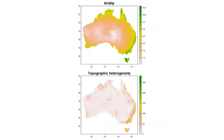Distance to the coast alone doesn't tell us much—presumably there are environmental factors mitigating the impacts on these populations. Two likely candidates are aridity and topographic heterogeneity. Towards the coast, we have much wetter environments, and as we move inland it becomes much drier. The second factor is topographic heterogeneity—particularly in coastal Queensland, systems tend to be much more topographically rugged near the coast, while inland landscapes become flatter.